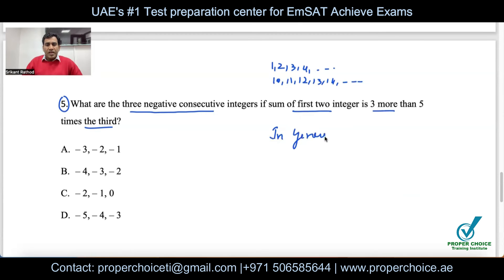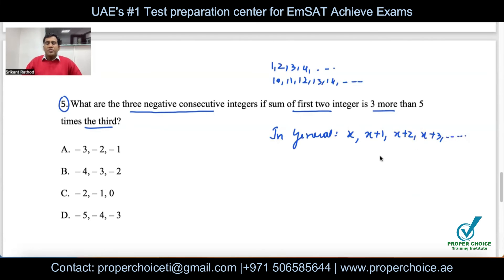Now follow the instructions: 'the sum of the first two integers' means we add the first and second terms. We set this equal to 'three more than five times the third' to form an equation.